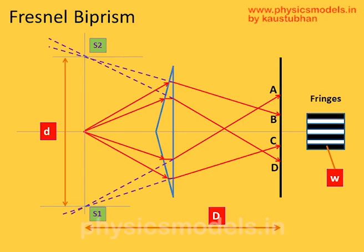And we can see the fringes being formed between B and C. So we have the small d, the distance between the two virtual sources, S1 and S2. We have the capital D between the line connecting the sources and the screen itself. And we have the fringe width, W.